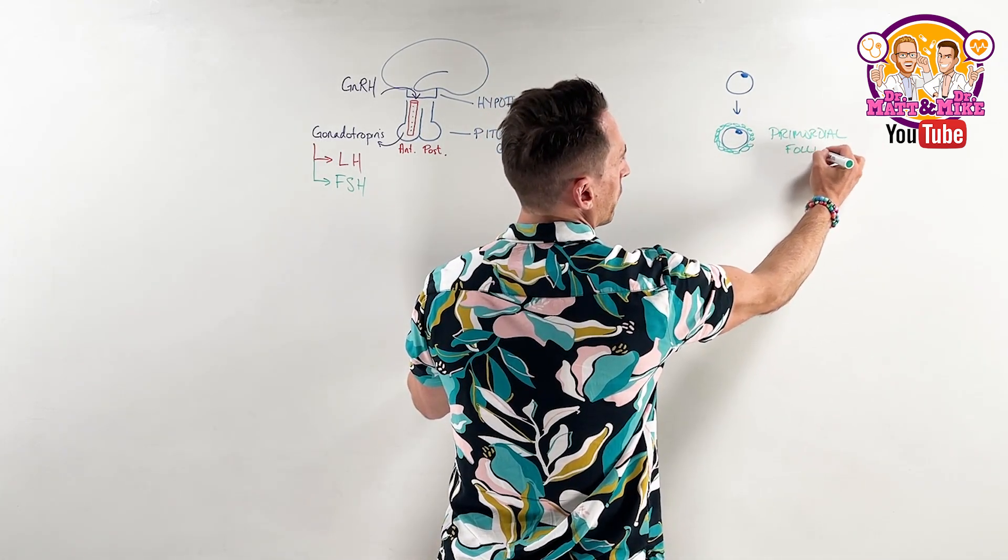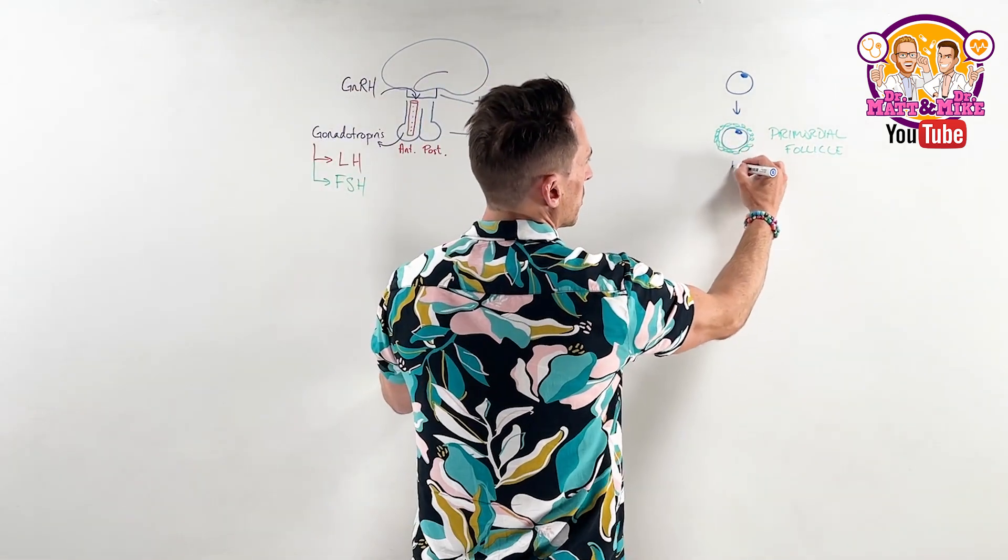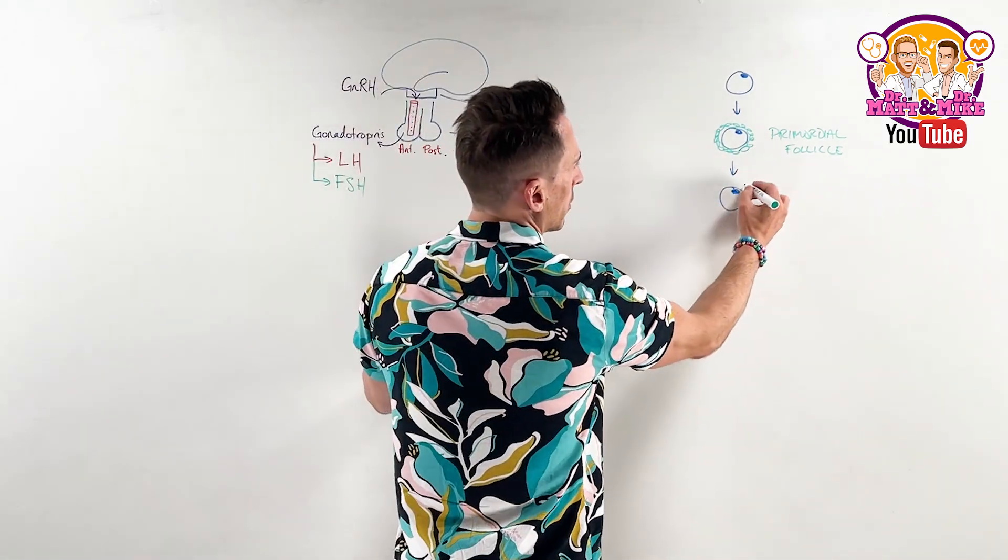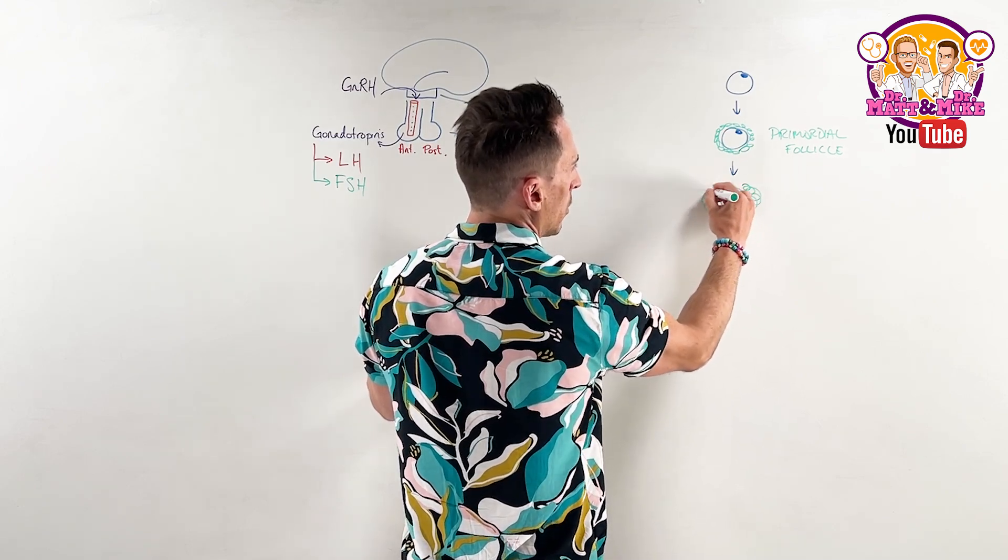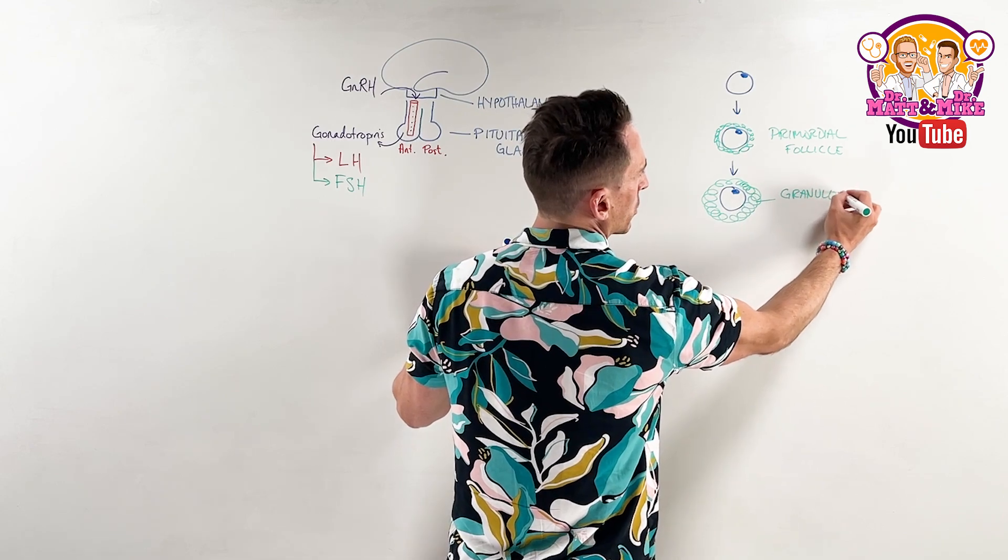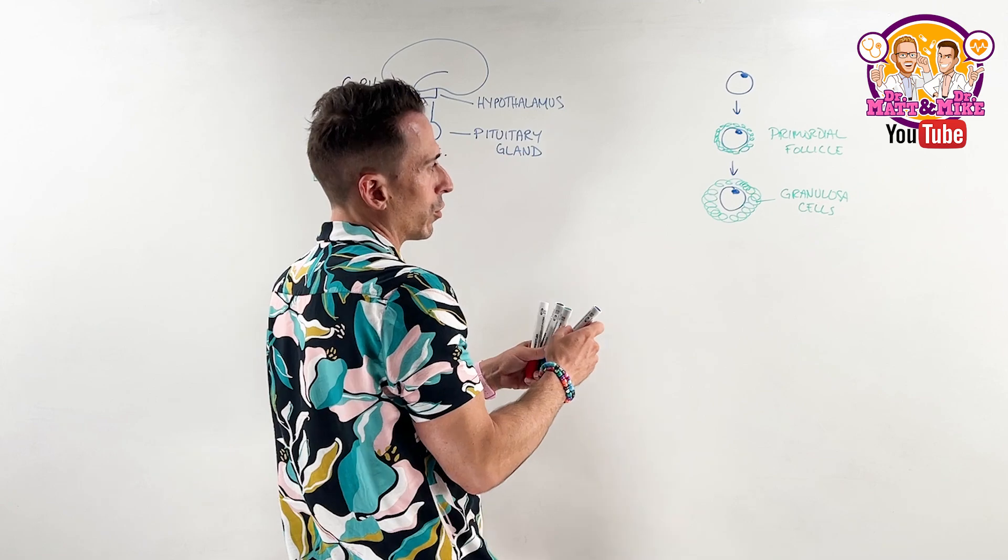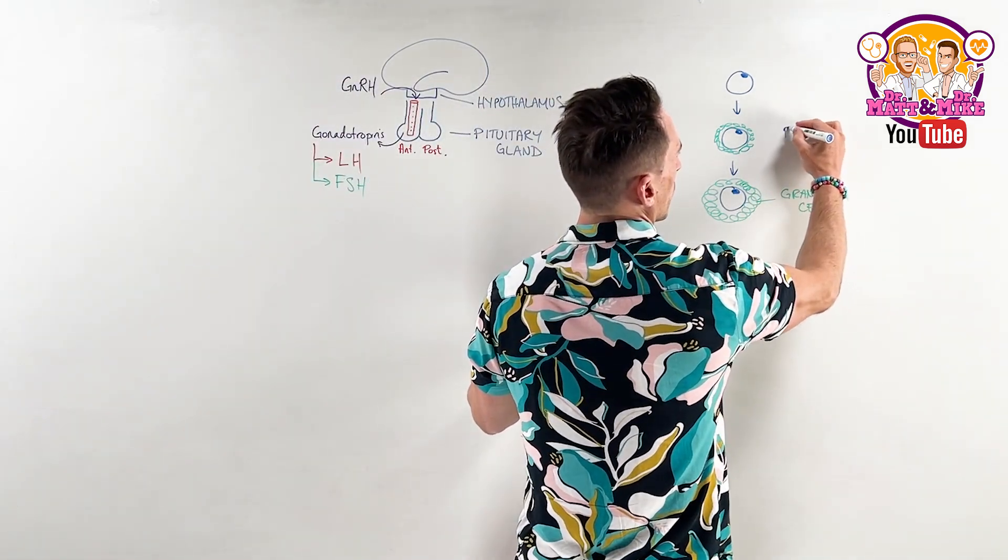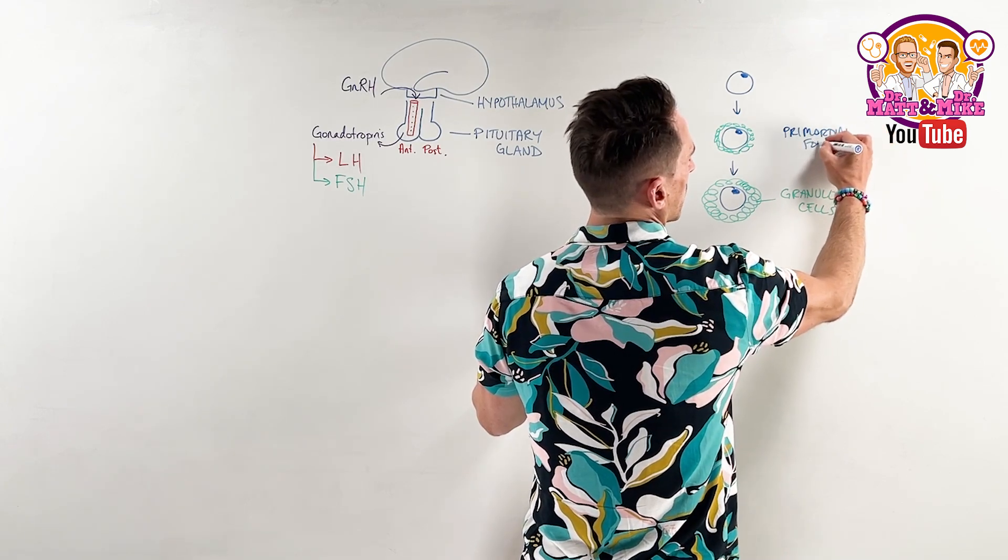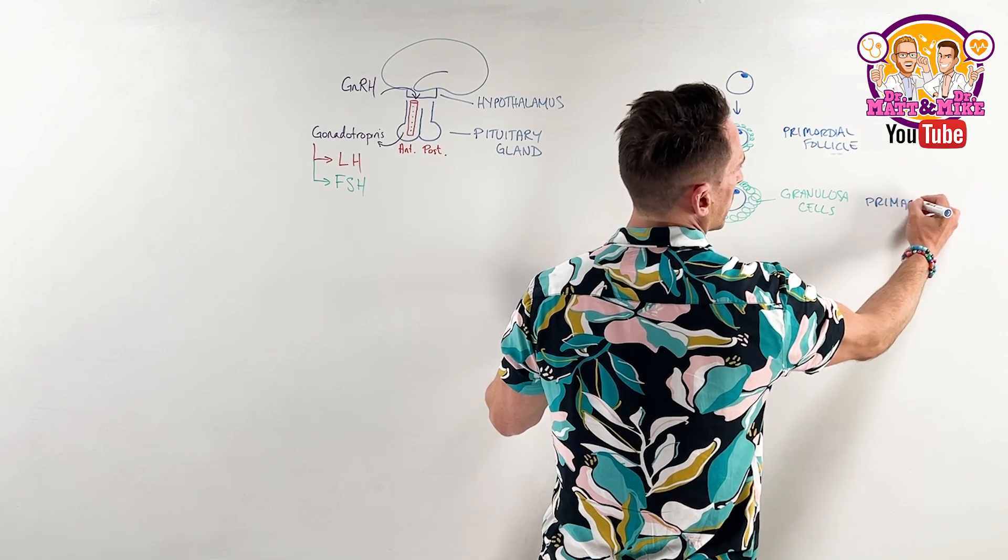In its primordial phase or stage, you have a primordial follicle and this primordial follicle has these pregranulosa cells. Then it continues to develop and this oocyte, these pregranulosa cells turn into actual granulosa cells. So here we've got granulosa cells and this whole thing isn't called a primordial follicle. Let's write primordial follicle.